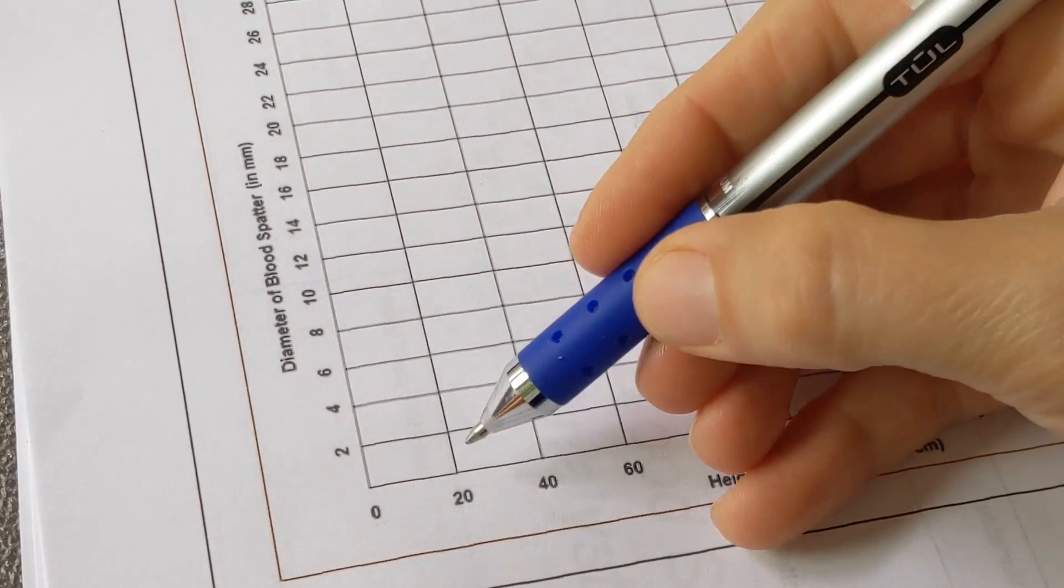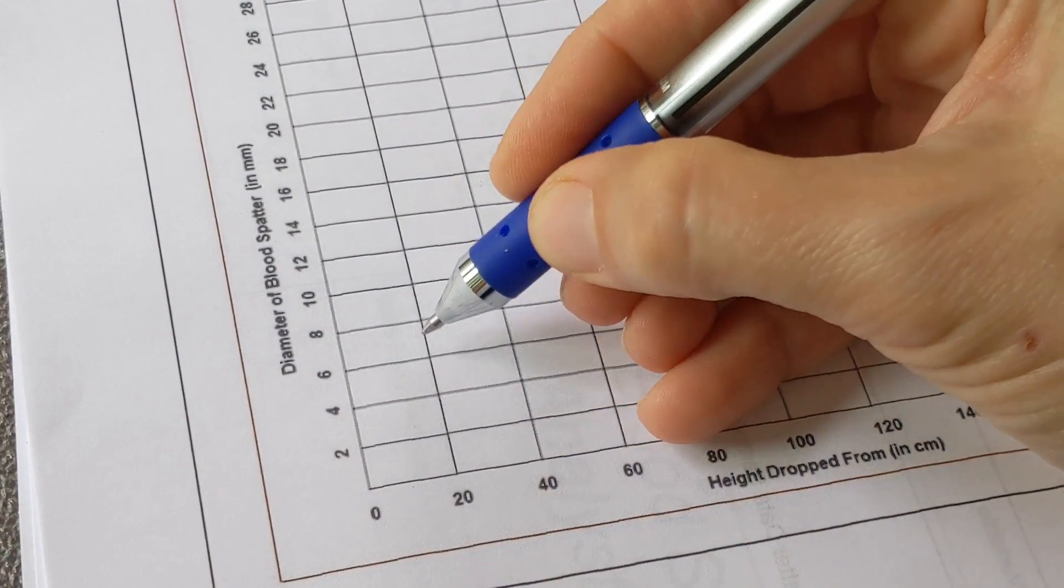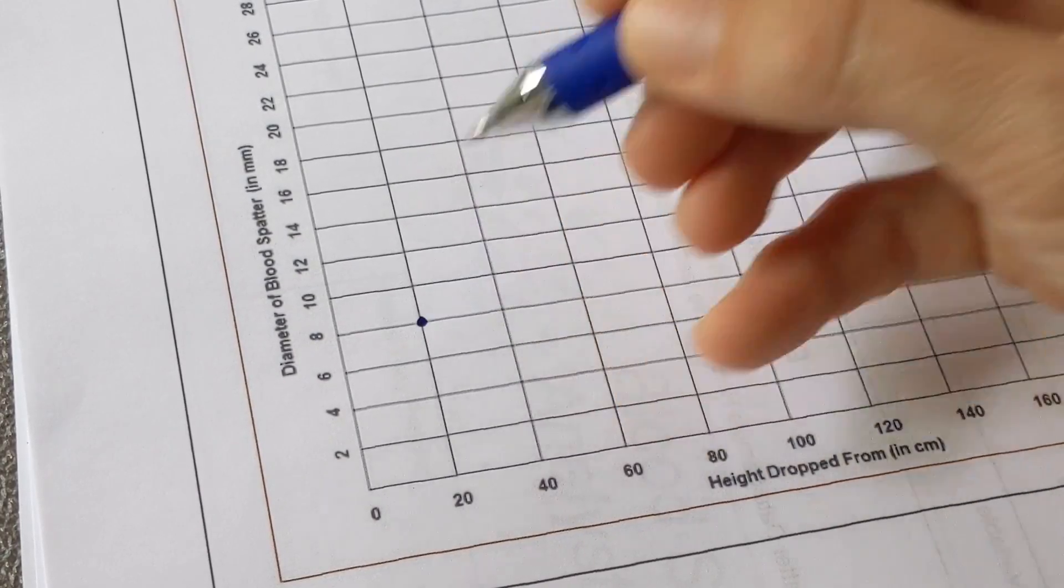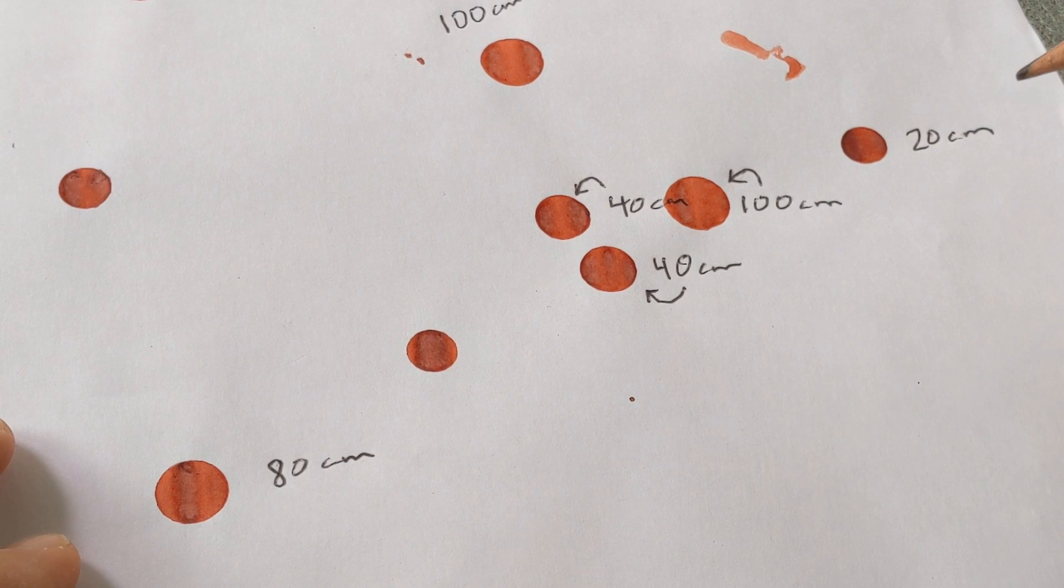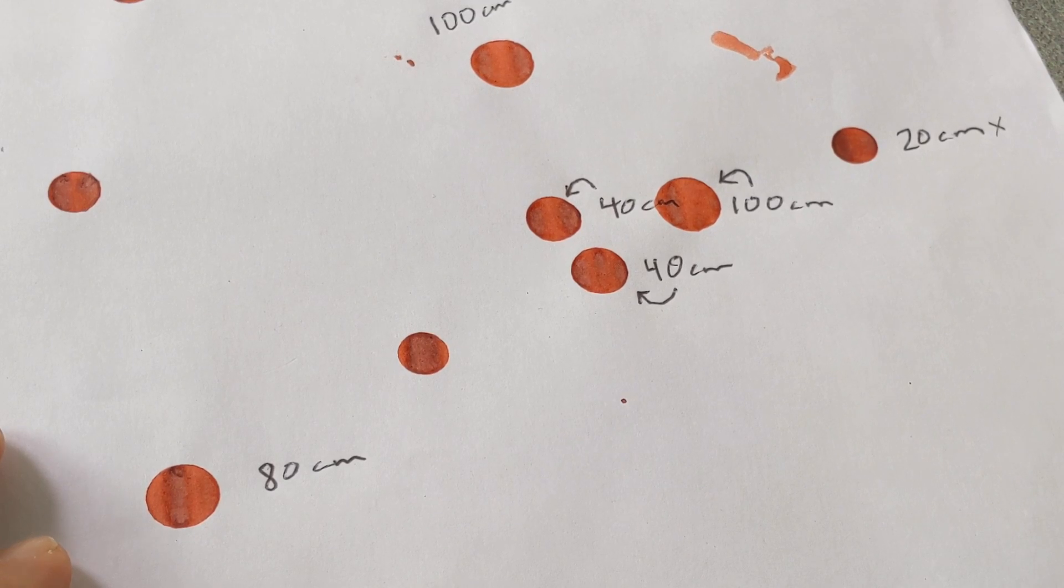Then you come to your graph paper, you find your 20 centimeters in height and your 8 millimeters in diameter, and you draw your first data point. I don't want to measure any data point more than once and record it, so I'm just going to put a little X next to it once I've used that data point.